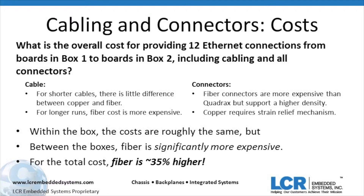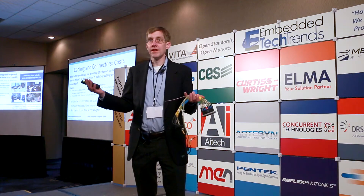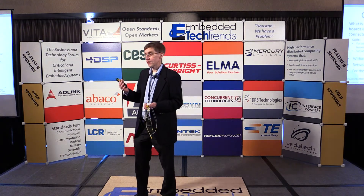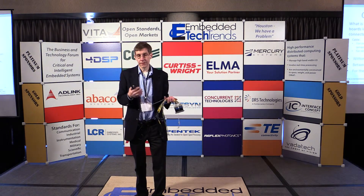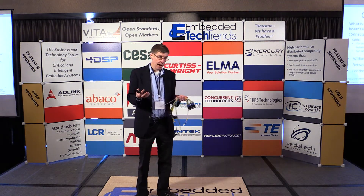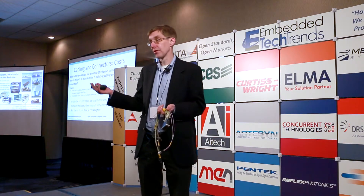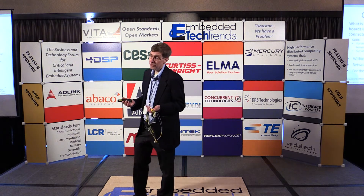If you look at the connectors — and again, these are all MIL standard connectors rated for airborne — the fiber optics connector is a bit heavier but the density is a lot greater. The Quadrax only supports six connections but it's lighter, though it also requires strain relief. If your problem is just getting the signal outside of the box, the cost of the two is relatively the same; what's really driving cost is the connector. When you take it between boxes, fiber optics becomes a lot more. Looking at the total solution, fiber optics would be about $10,000 to support 12 gigabit Ethernet ports, and Quadrax is about $7,500 — so fiber optics has about a 35% cost premium. But with that 35%, you don't have to worry about EMI or EMC.